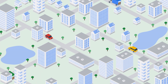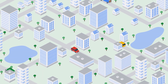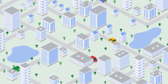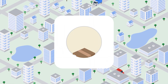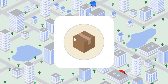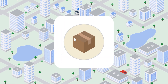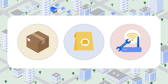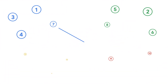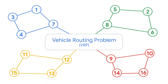Every day, countless vehicles criss-cross our cities. It looks simple, but for many businesses — such as a logistics company that delivers packages, an on-demand platform who serves us food in real time, or a field service provider who sends technicians to homes — it's a mind-boggling puzzle: the vehicle routing problem.